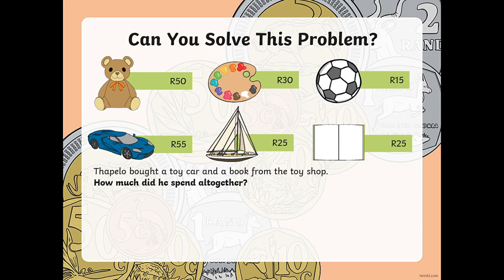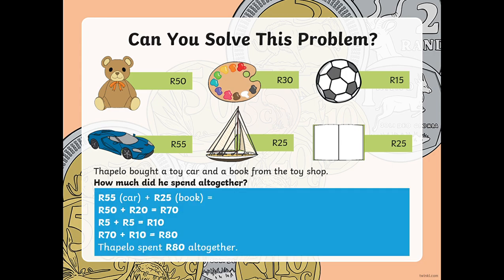Tapelo bought a toy car and a book from the toy shop. How much did he spend altogether? The toy car is 55 rand and the book is 25 rand. So we're going to say 55 rand plus 25 rand equals. We bring down 50 rand and 20 rand: 50 rand plus 20 rand equals 70 rand. Then 5 rand plus 5 rand is 10 rand. So 70 rand plus 10 rand is 80 rand.